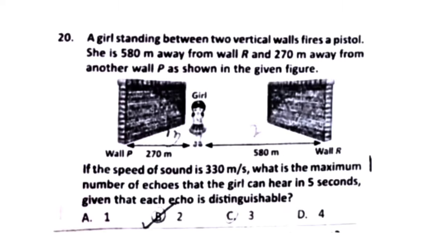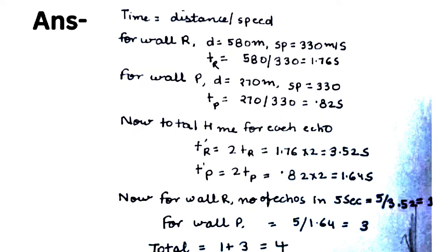Question 20: A girl standing between two walls fires a pistol. She is 580 metres from wall R and 270 metres from wall P. Speed of sound is 330 m/s. Time for echo from wall R: 2×580/330 = 3.52 seconds. Time for echo from wall P: 2×270/330 = 1.64 seconds.